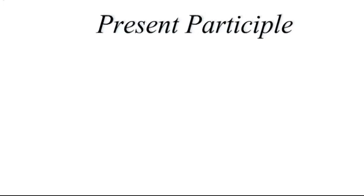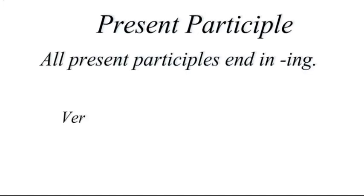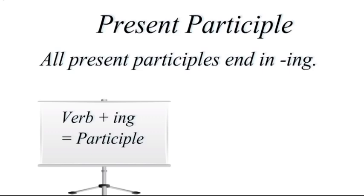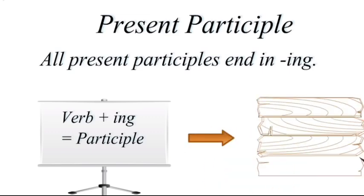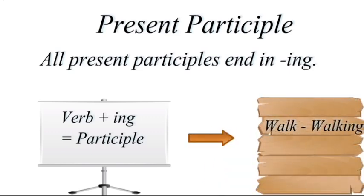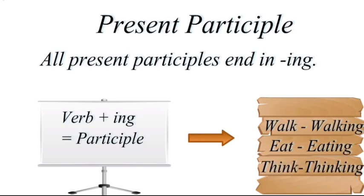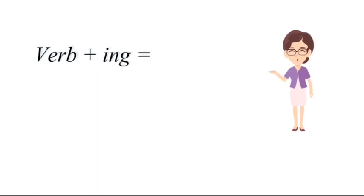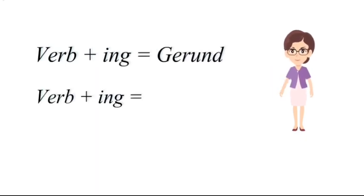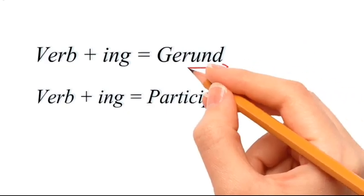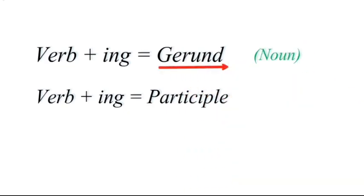All present participles end in '-ing' — you simply add '-ing' to the main verb. So 'walk' becomes 'walking,' 'eat' becomes 'eating,' 'think' becomes 'thinking,' and so on. Note that a gerund is also formed by adding '-ing' to the verb. The difference is: a gerund is used as a noun, and a participle is used as an adjective.